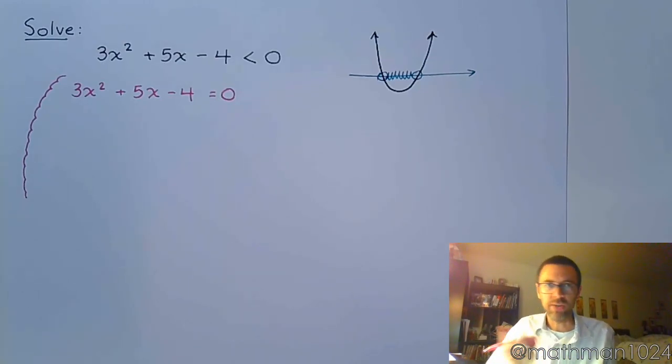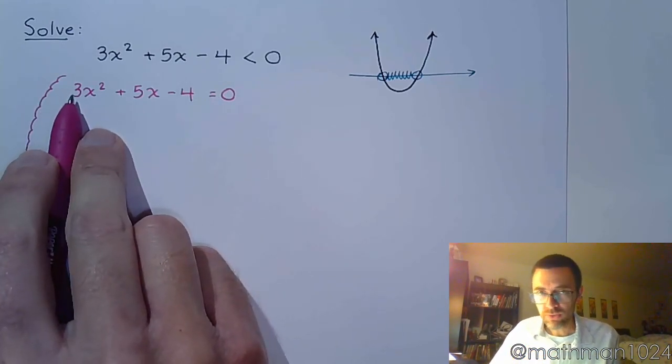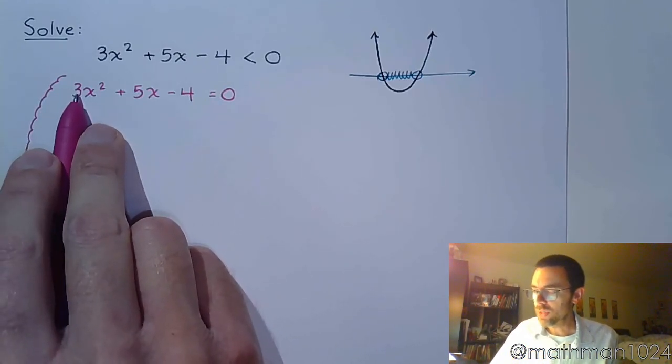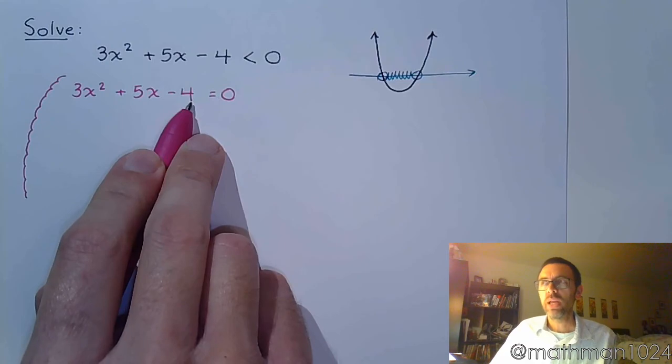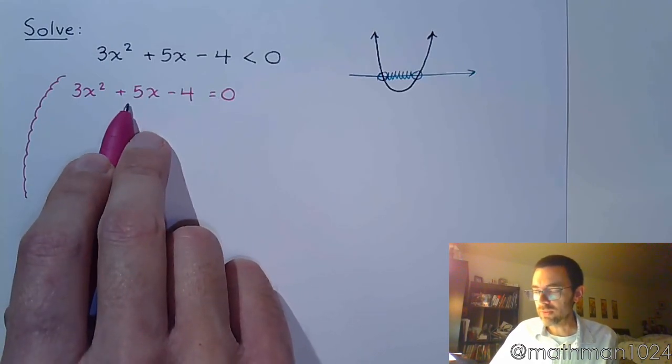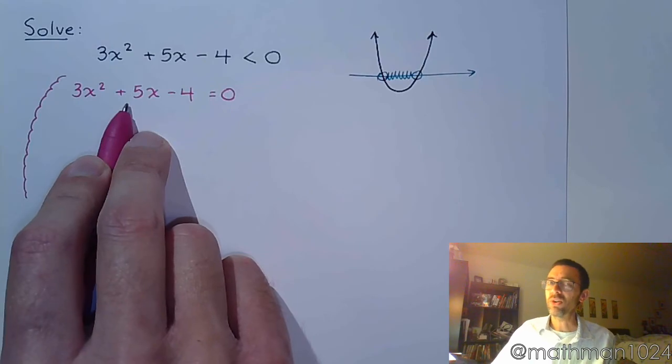Let's factor, right? We've been factoring everything else. If I do factoring and do the AC method, 3 times 4 is 12. And are there factors of 12 that subtract 5? Unfortunately, there are not.